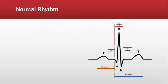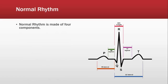So this is the normal rhythm. The picture to the left gives you an image of a normal rhythm and breaks it down for you — the components of a normal rhythm. If you look over here, you see something called P, something called QRS, and T. The normal rhythm is made of four components. The P wave represents atrial depolarization.